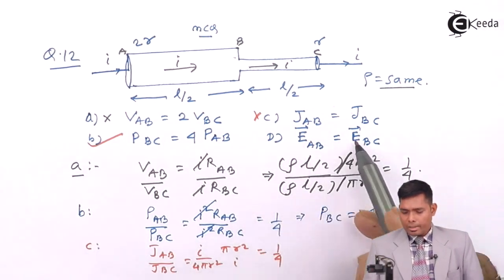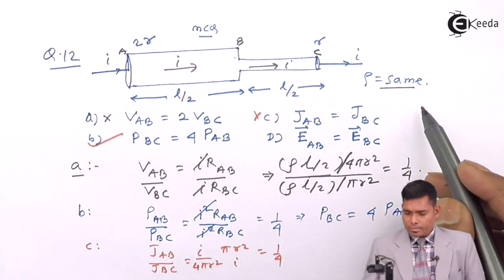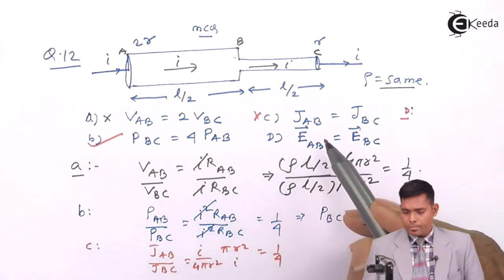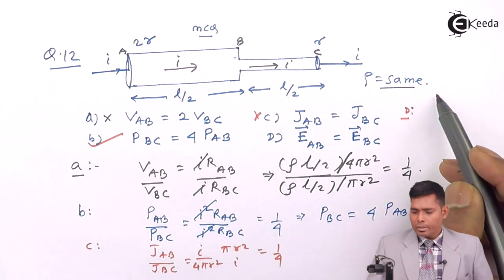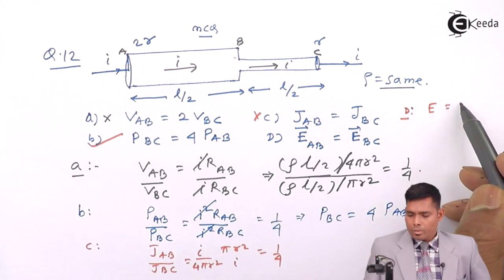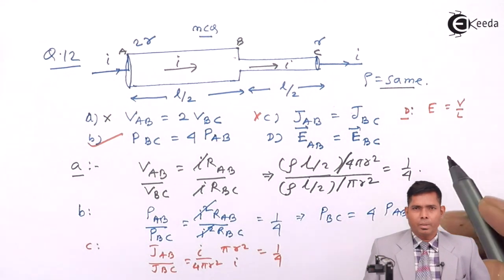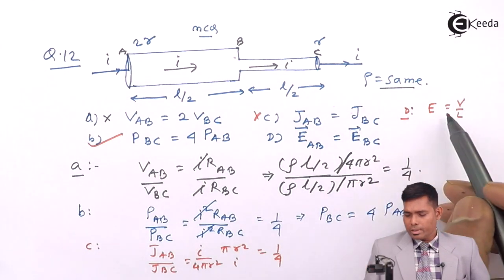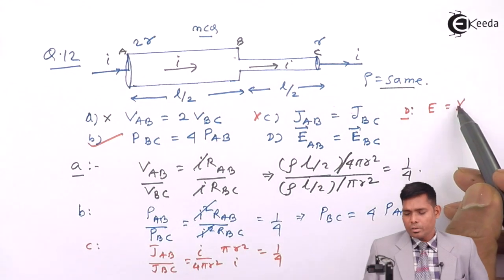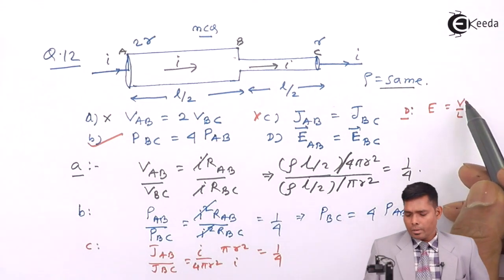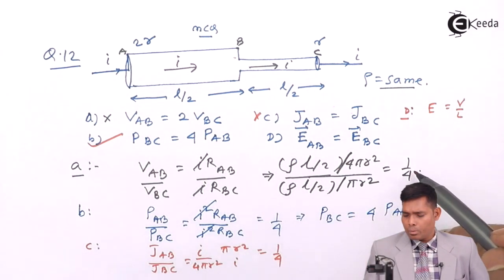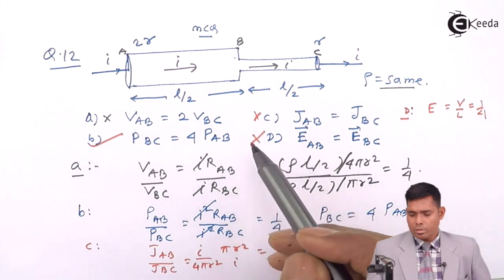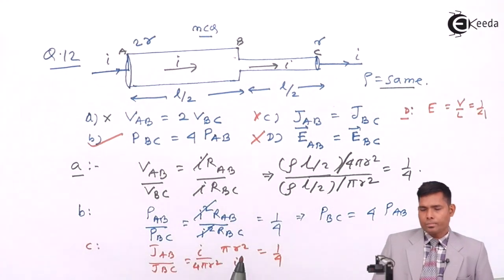Similarly, electric field, the D part. Electric field is V/L, potential gradient. The length is same, so it depends directly on V. And V ratios are one by four, so electric field will also be one by four. So this is the right answer.